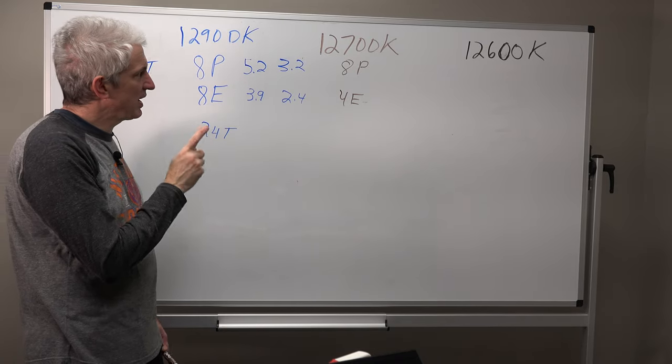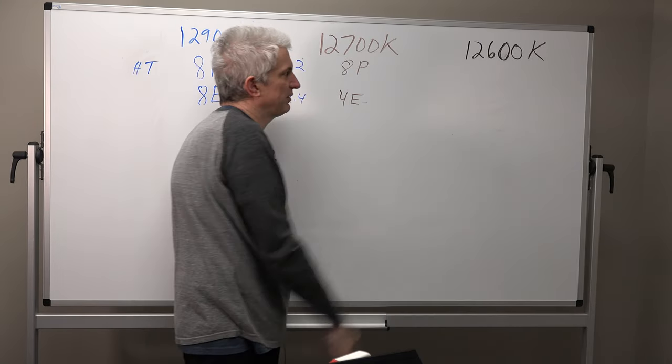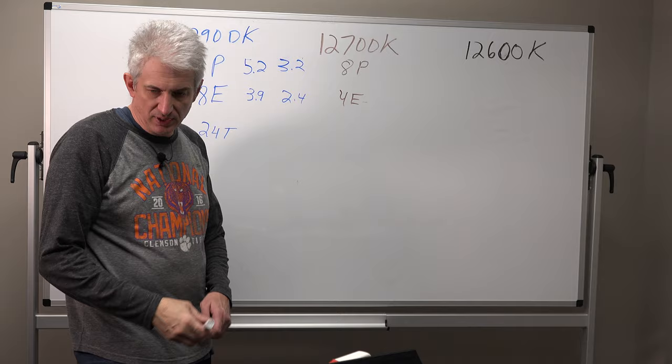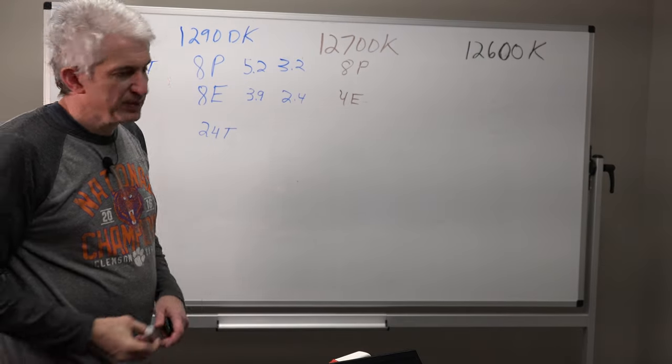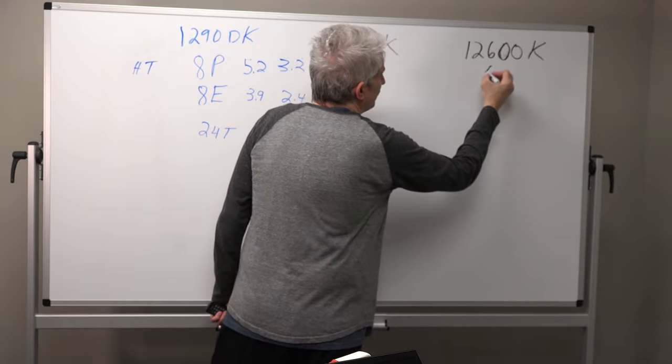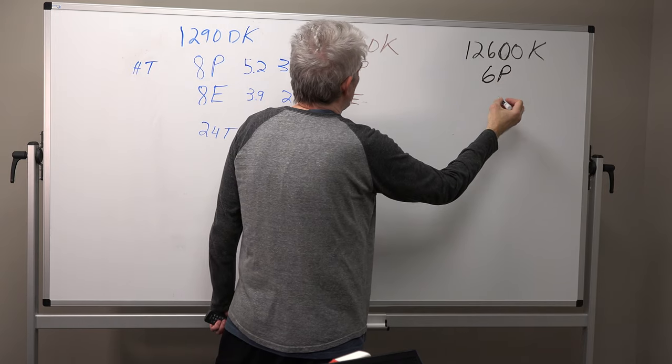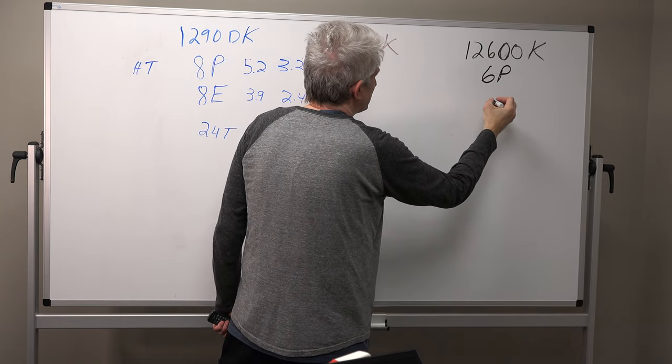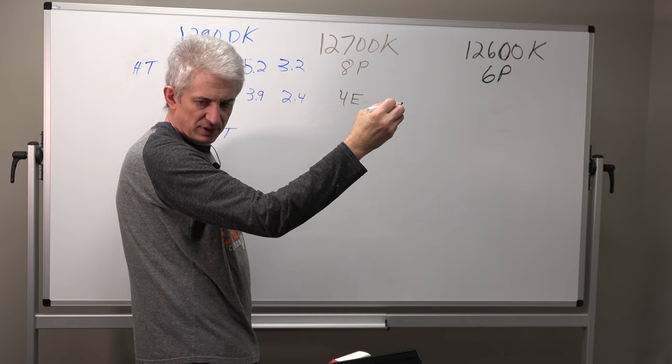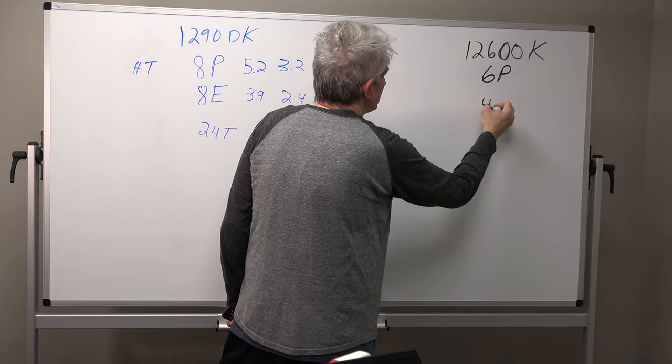Now let's talk also about the i5 variant down here, the 12600K. This one has six performance cores, or P cores, and it has four efficiency cores.